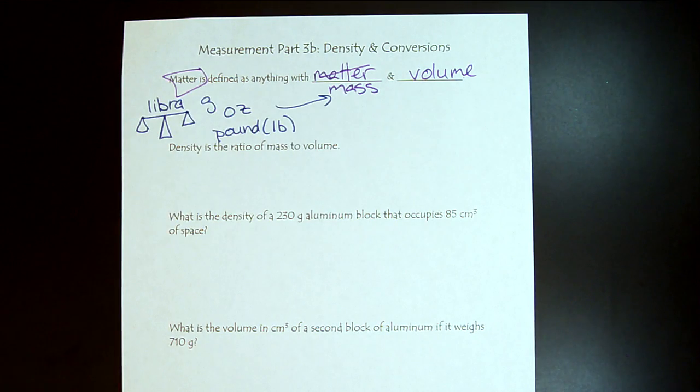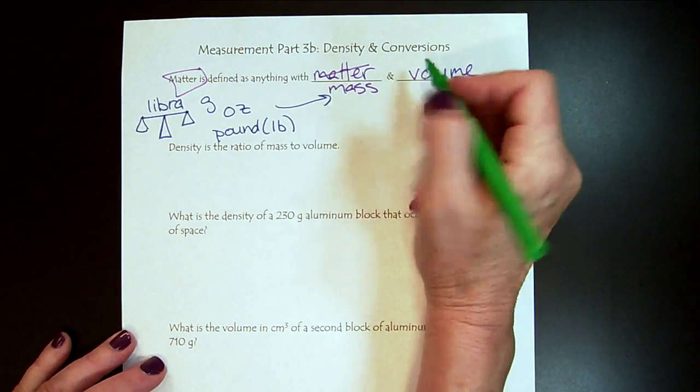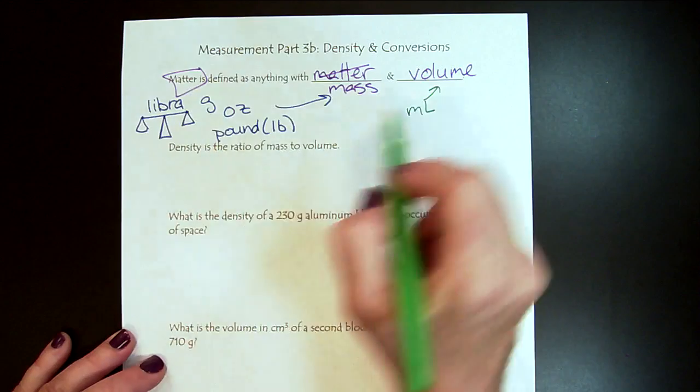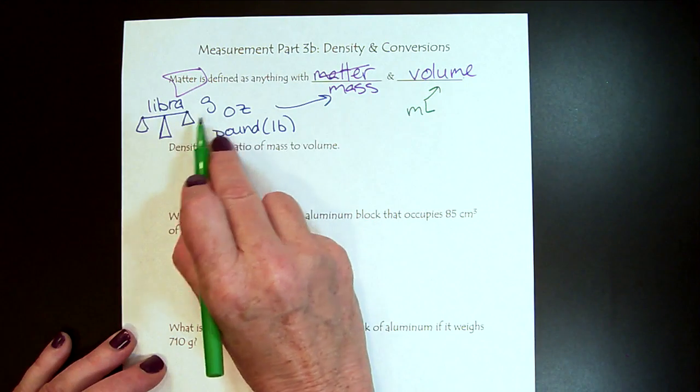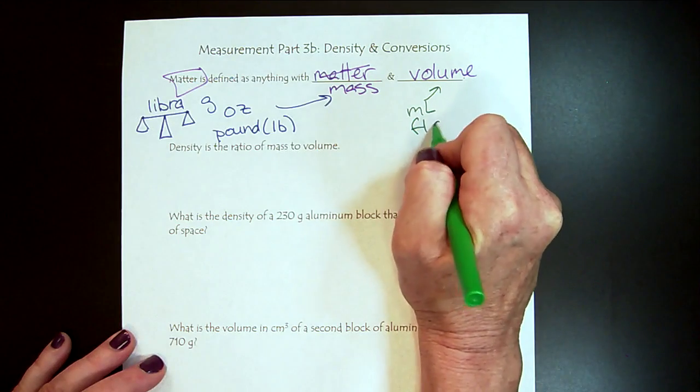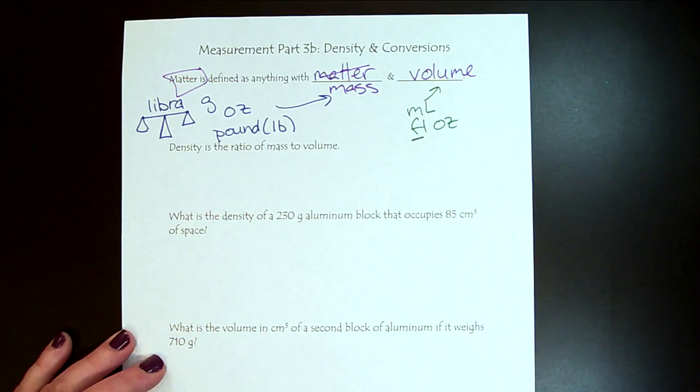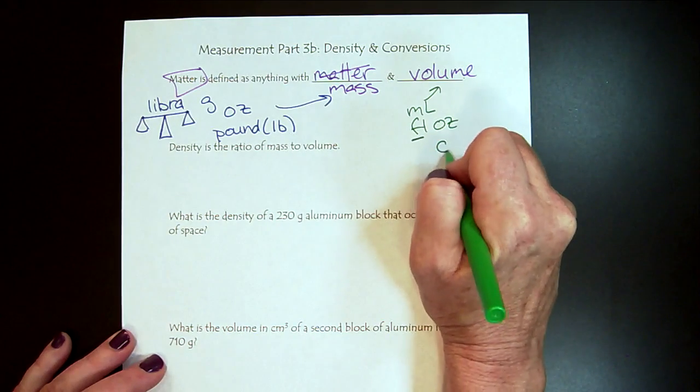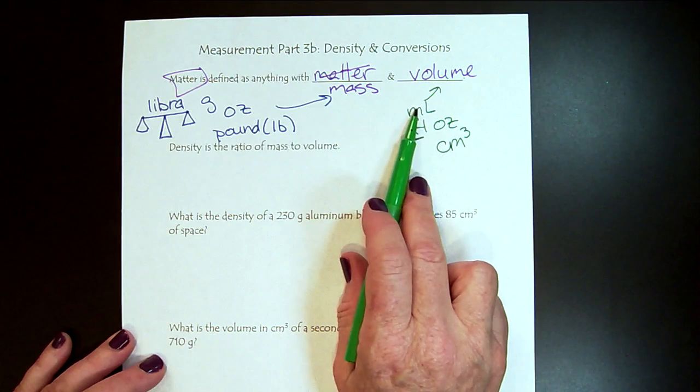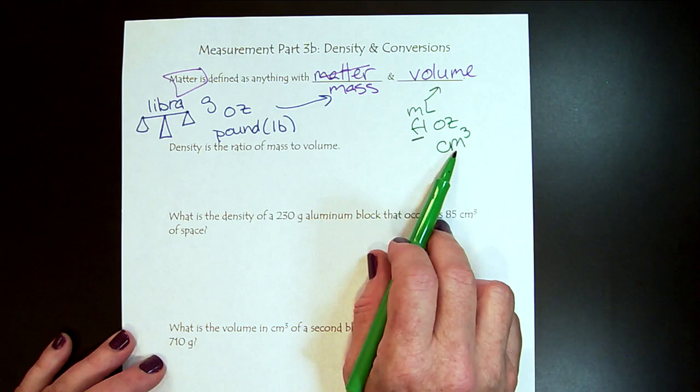Now volume, the other aspect of matter is volume. So now we would be looking at like milliliters. In the English system, ounces are for mass, and fluid ounces are for volume, so it's important to pay attention to those details. And then we've also talked about volume when it's a liquid: milliliters, fluid ounces. But solids, we tend to look at distance cubed.